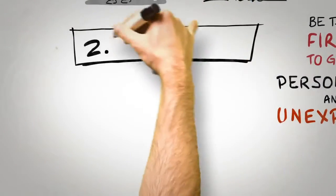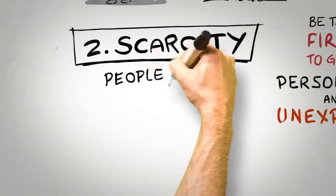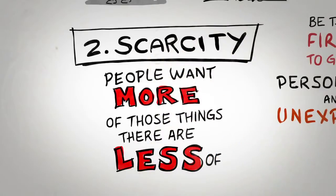The second universal principle of persuasion is scarcity. Simply put, people want more of those things they can have less of.